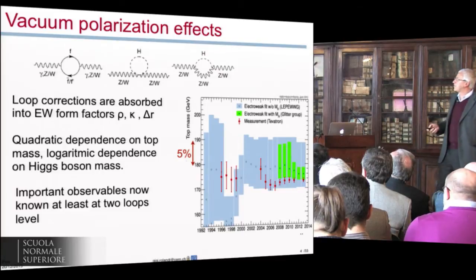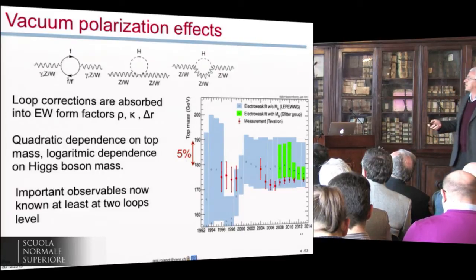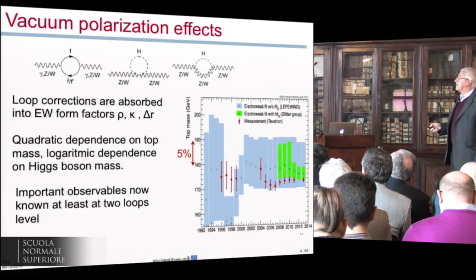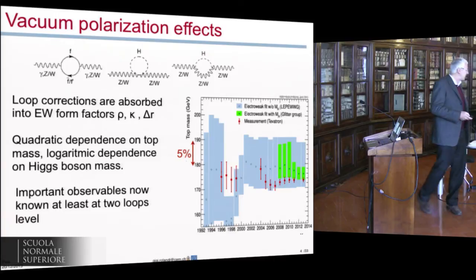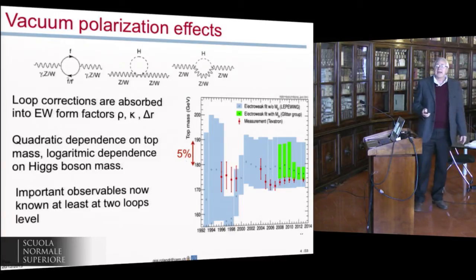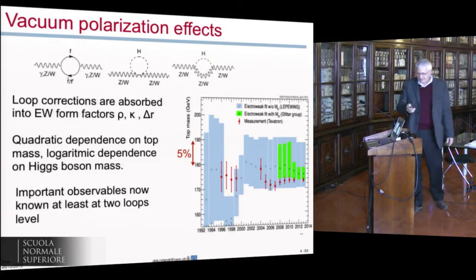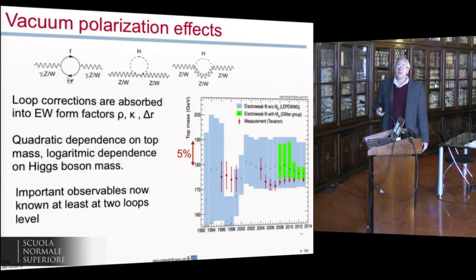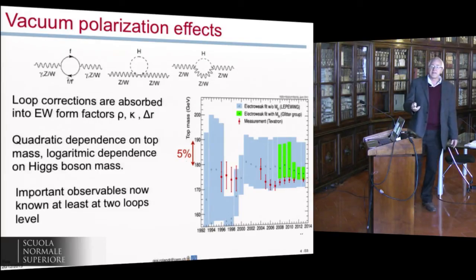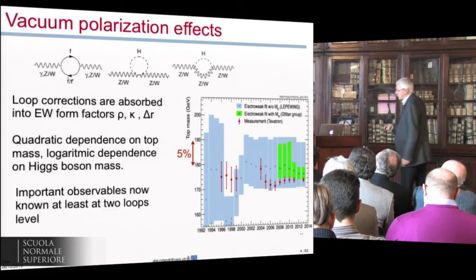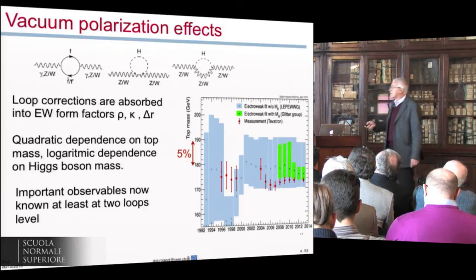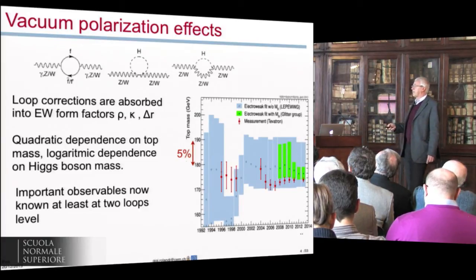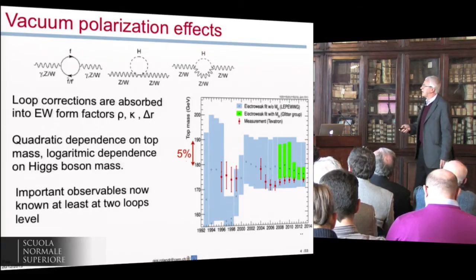It's known, this has been mentioned many times, that the loop corrections are absorbed in some electroweak form factors, rho, kappa, delta R, then converted into the epsilon in that paper. These effects are quadratic on the top mass and have a logarithmic dependence on the Higgs boson mass. Clearly, it's very important that the calculation of those effects match the experimental precision. And today, the important observables are now known at least at two-loop level.